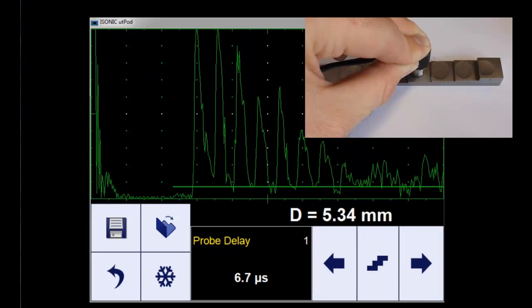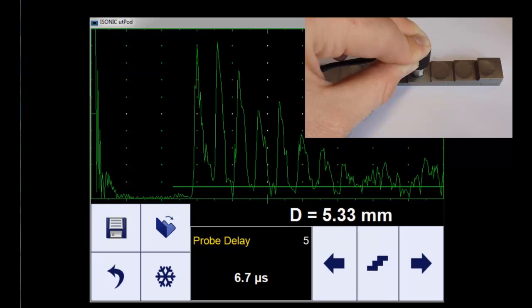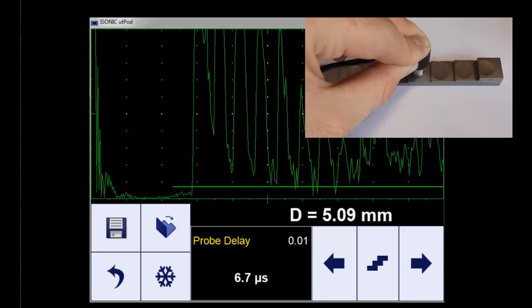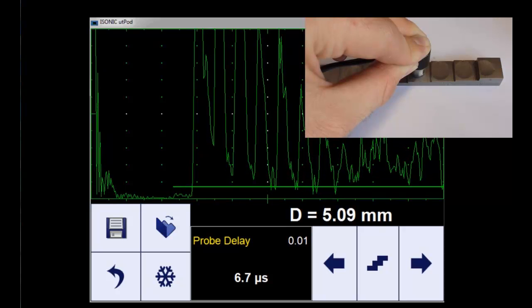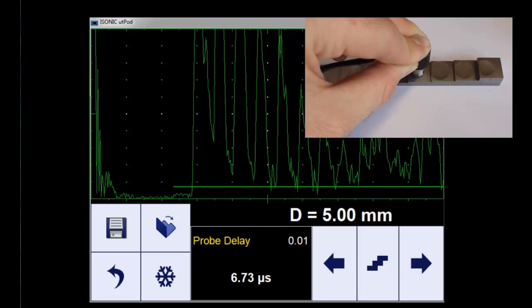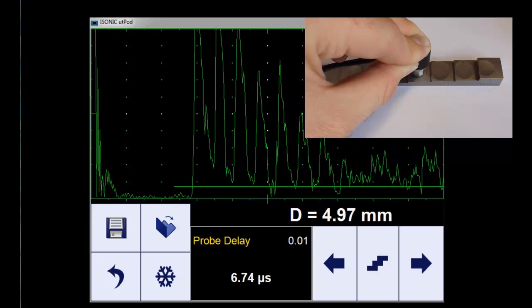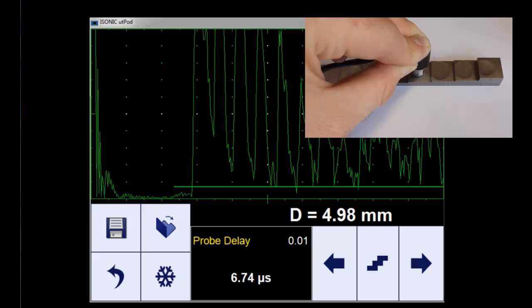Because we are now holding the probe on the five millimeter block, once the five millimeters is measured, the calibration is done. The probe delay value is correct, and now we can move out of this calibration.